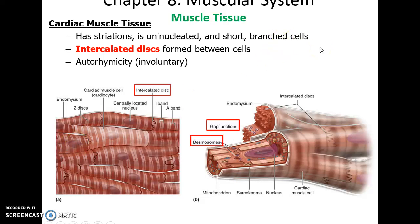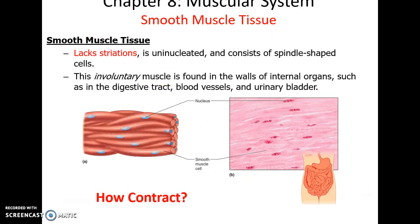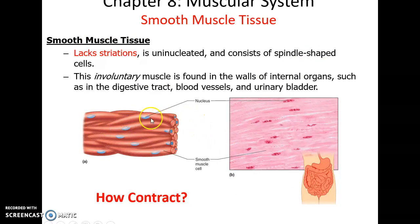Cardiac muscle tissue does not need the brain to activate — it can activate involuntarily and has automaticity. Smooth muscle tissue consists of small tapering cells with a single nucleus per cell. They are controlled involuntarily; we don't consciously think of them contracting. They are found in the hollow organs of the body, such as the digestive tract, blood vessels, and urinary bladder, and they lack striations — that is why they are called smooth.